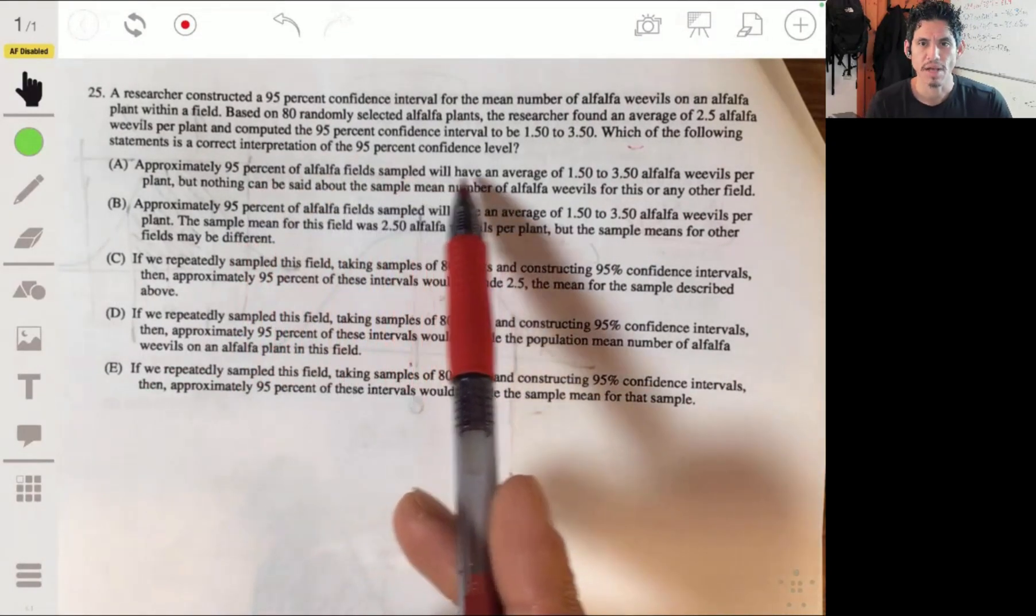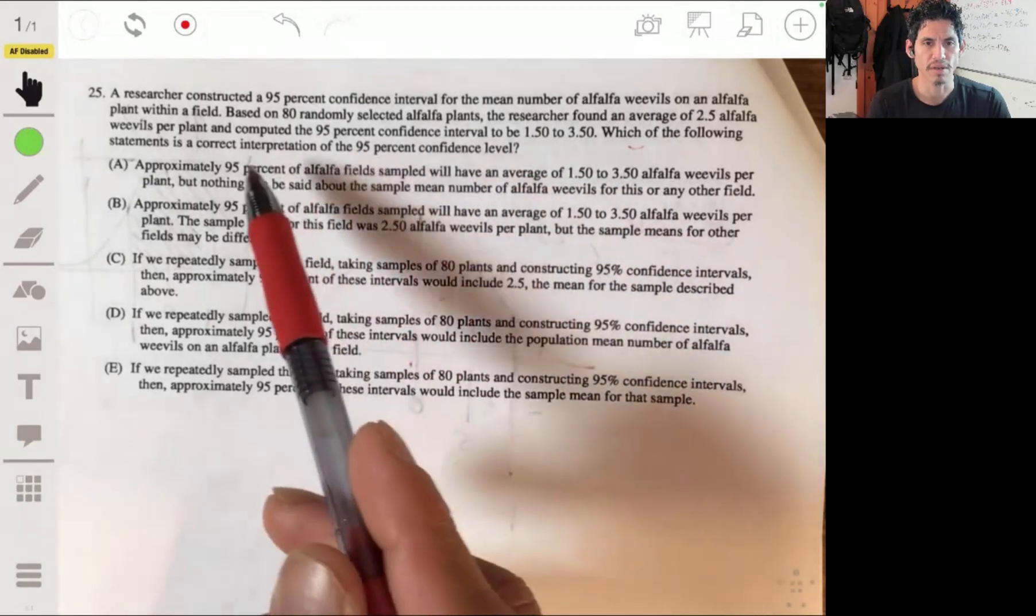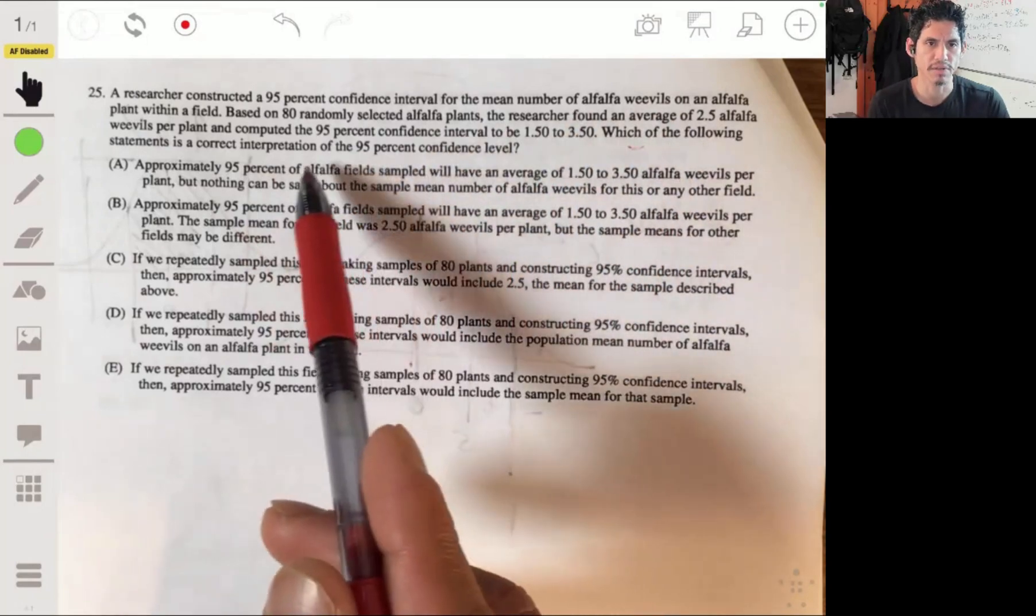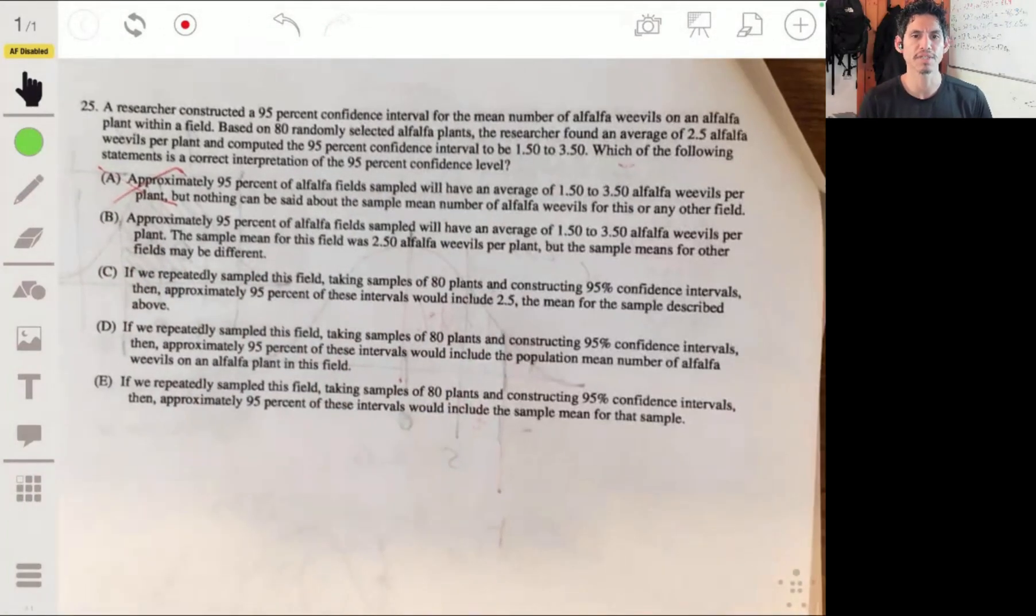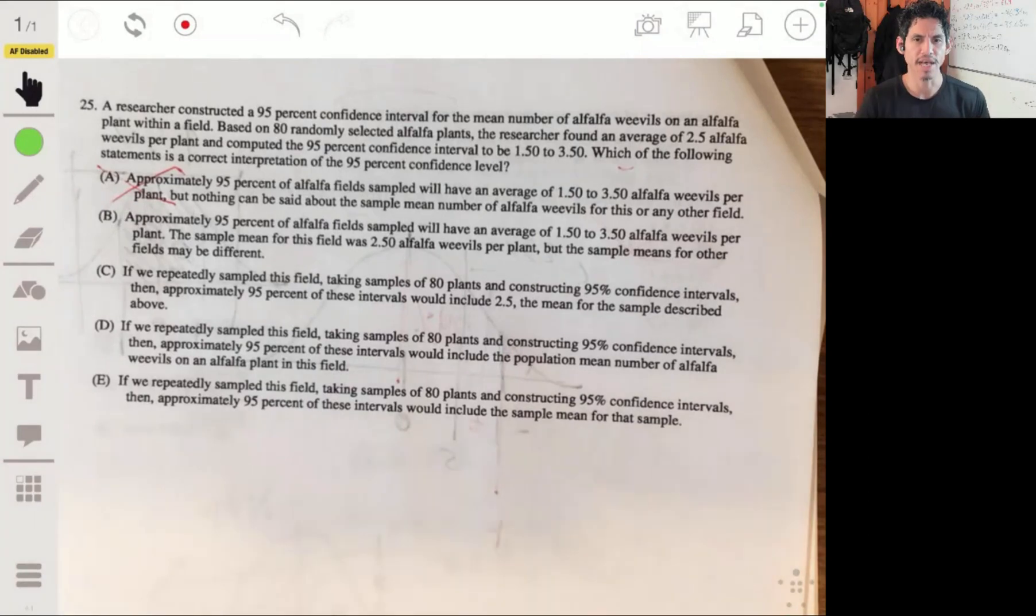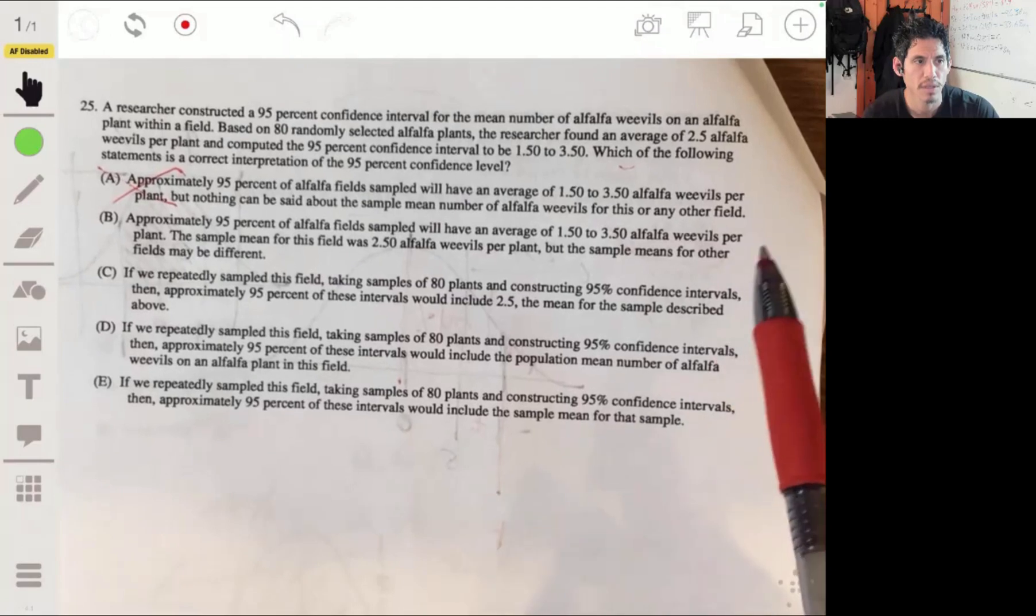Let's just read them through. Approximately 95% of alfalfa field samples will have an average... Nope. No way wrong. Well, I mean, it's wrong. Let me just say it this way. Remember, the 95% confidence interval means that we're pretty confident that this interval contains the true mean number. How confident are we? We say 95%, meaning that if we were to do this sampling statistical technique, 95% of the time we would get confidence intervals that actually did capture it. We don't know what number it is, but we just know it's in these intervals 95% of the time, approximately 95% of the time.